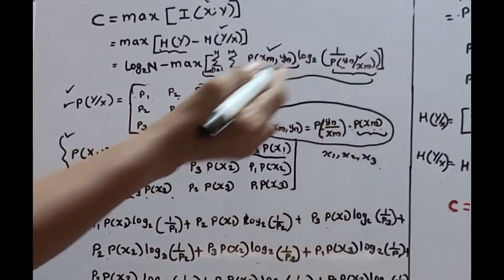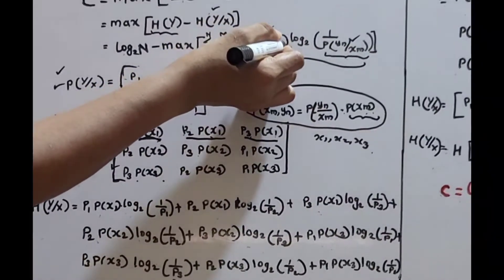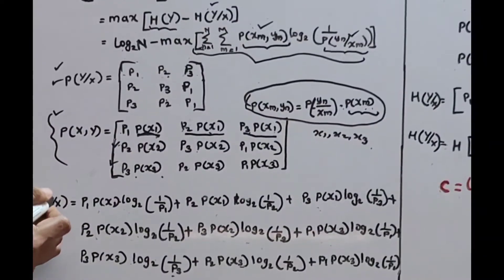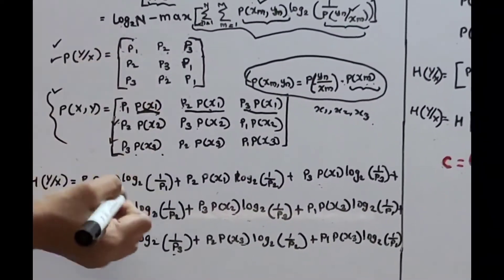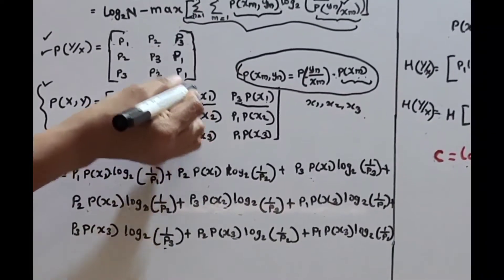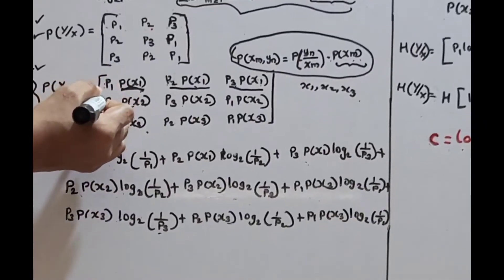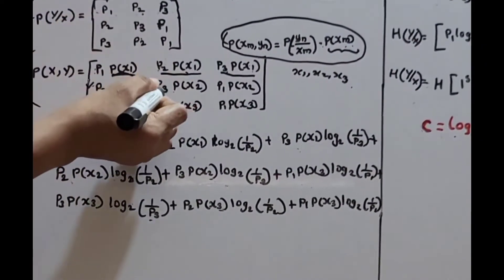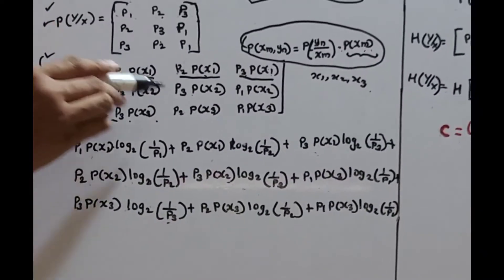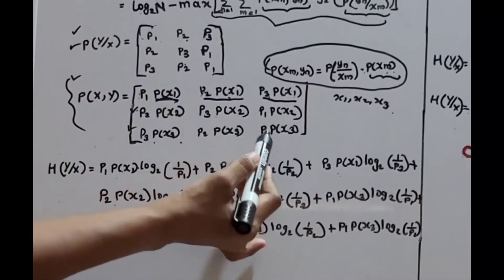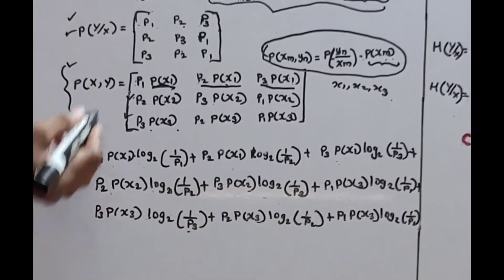We can now calculate the conditional entropy as the summation of the joint probability matrix times log(1 / conditional probability matrix). So H(y|x) equals: P1·P(x1)·log(1/P1) + P2·P(x1)·log(1/P2) + P3·P(x1)·log(1/P3), plus P2·P(x2)·log(1/P2) + P3·P(x2)·log(1/P3) + P1·P(x2)·log(1/P1), plus P3·P(x3)·log(1/P3) + P2·P(x3)·log(1/P2) + P1·P(x3)·log(1/P1). This is the conditional entropy of this matrix.